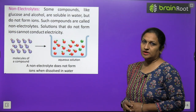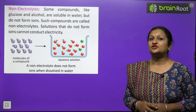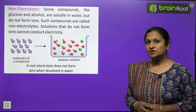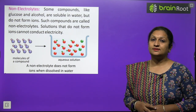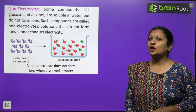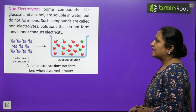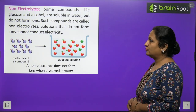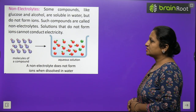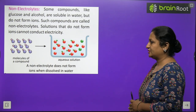Non-electrolytes: there are many substances that do not break into positive or negative charged ions when dissolved in water — such as glucose. Glucose does not ionize, which is why it is a non-electrolyte and will not conduct electricity. Some compounds like glucose and alcohol are soluble in water but do not form ions. Such compounds are called non-electrolytes, and their solutions cannot conduct electricity.